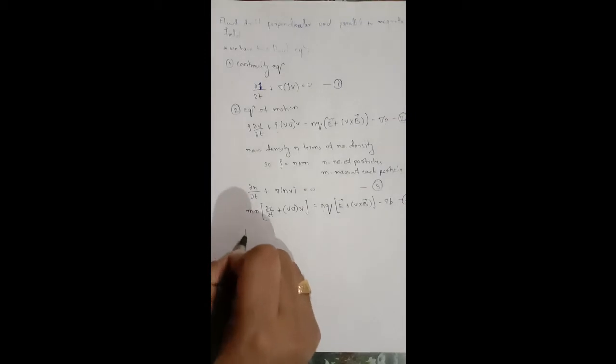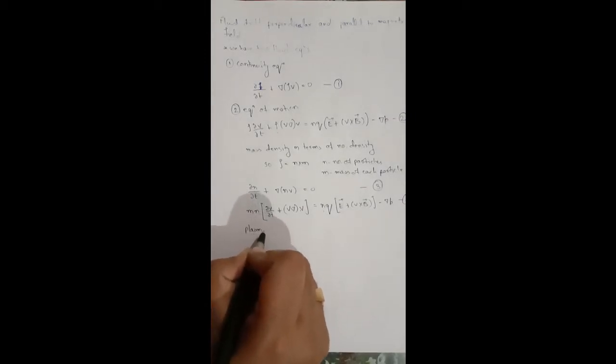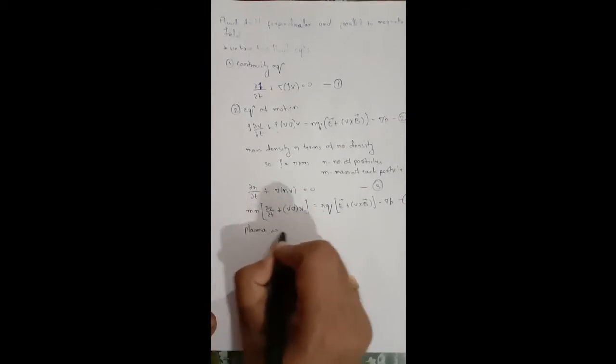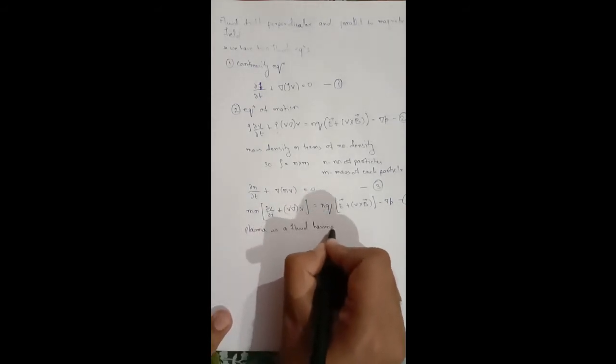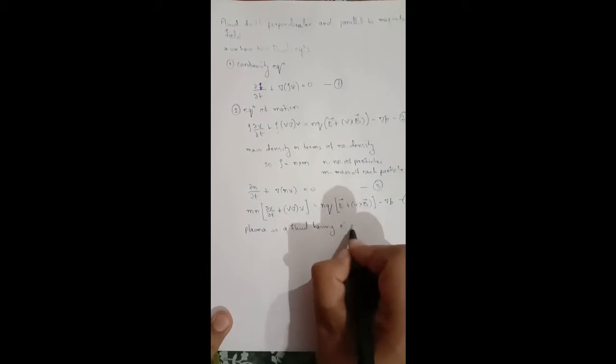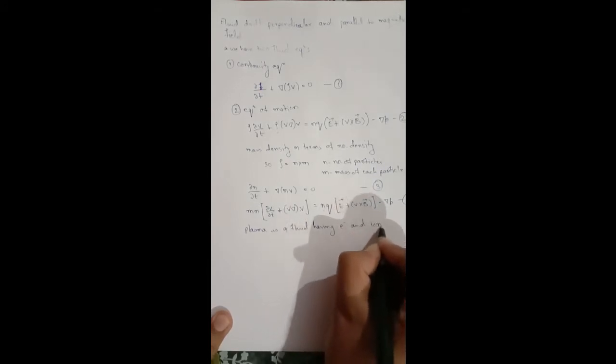Plasma is composed of two species. The two species are electrons and ions. So plasma is a fluid consisting of electrons and ions.